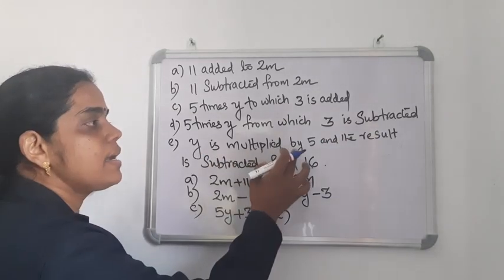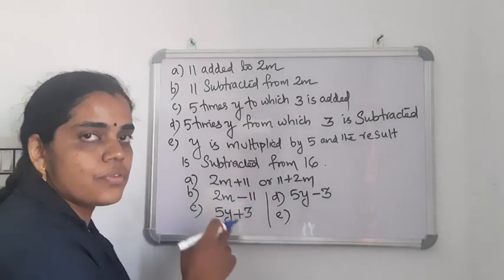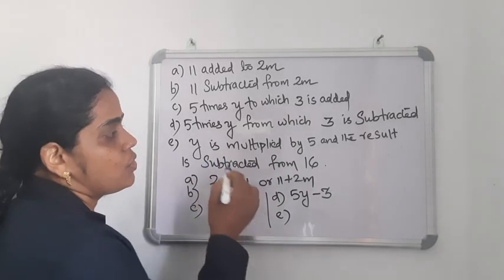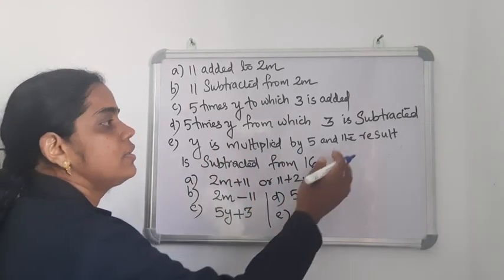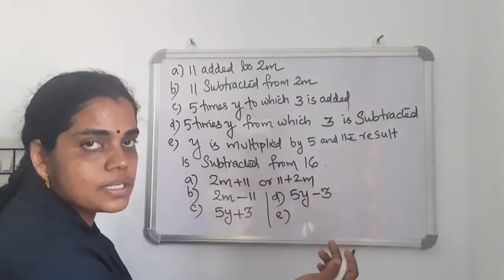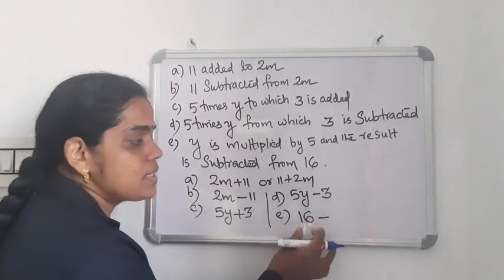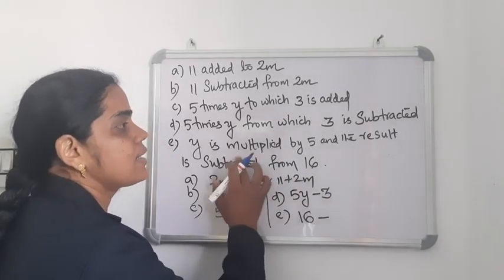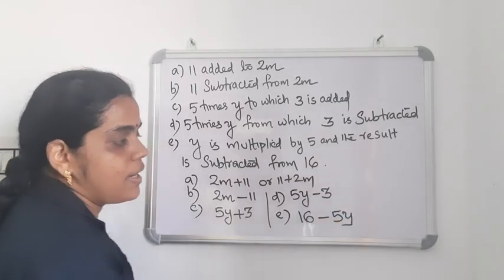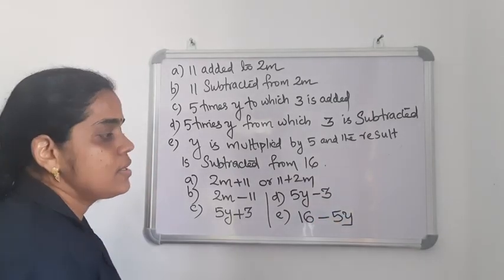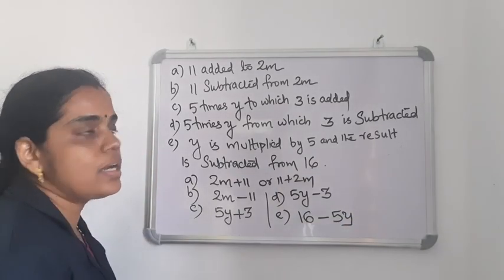Last: Y is multiplied by 5, and the result is subtracted from 16. Y multiplied by 5 is 5Y. The result is subtracted from 16, so we write 16 first and subtract 5Y from it. Therefore, 16 minus 5Y is the required expression.